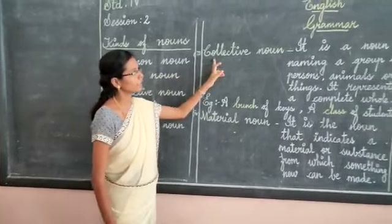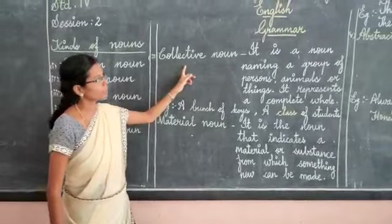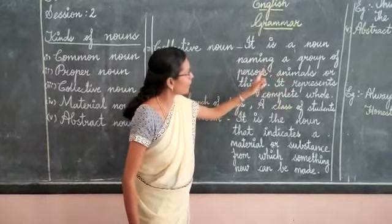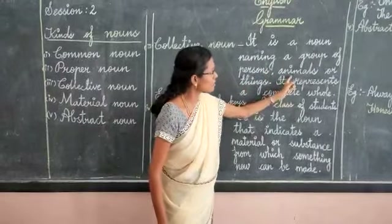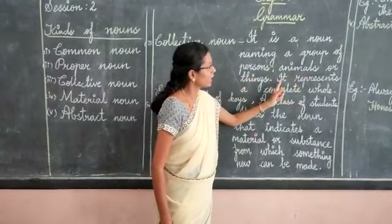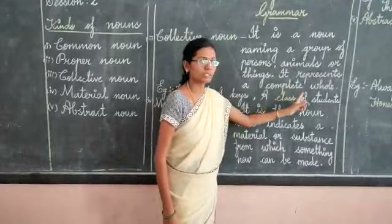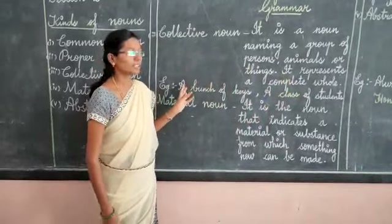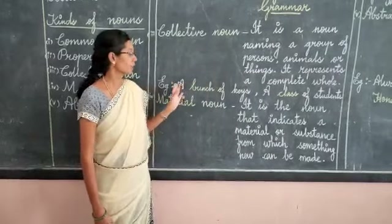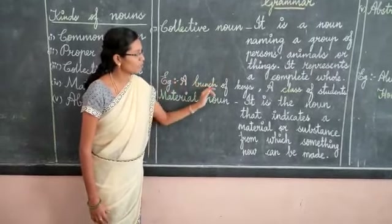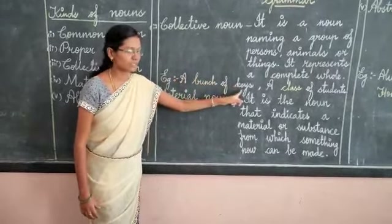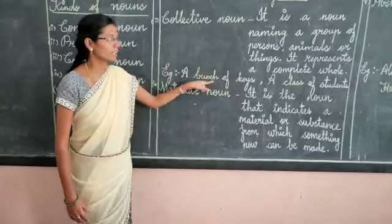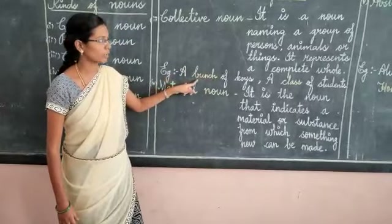Now let's look at collective noun. What is collective noun? It is a noun naming a group of persons, animals or things. It represents a complete whole. So collective noun is one kind of noun, but it refers to a group of things. For example, a bunch of keys — keys is a noun, and the collective noun here is 'bunch'. The colored word is the collective noun.